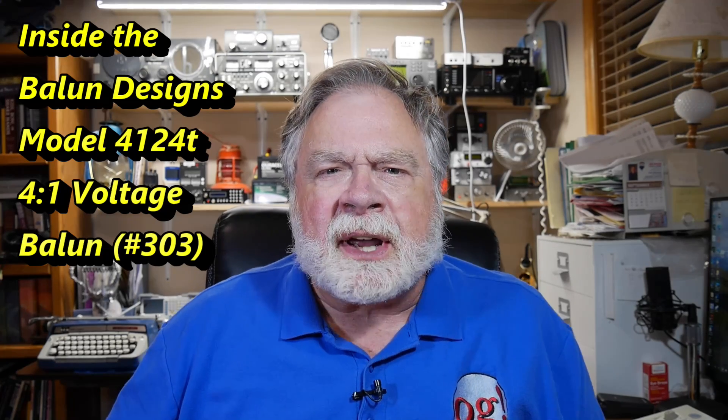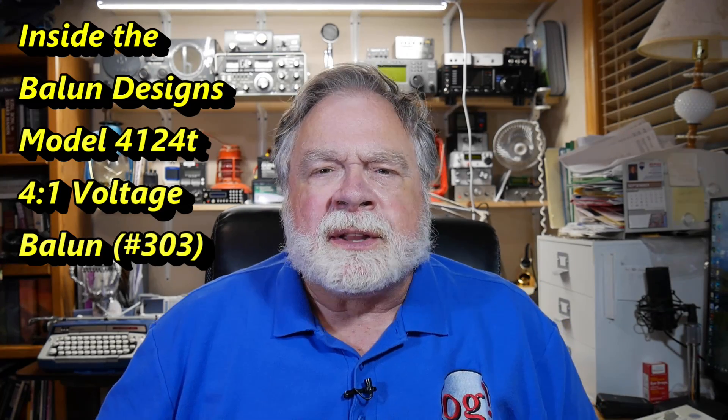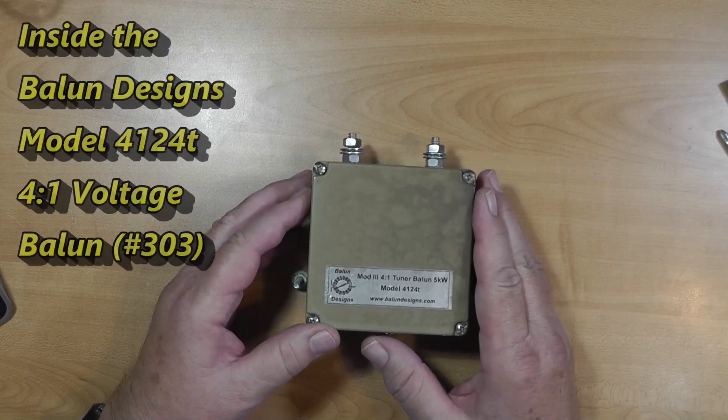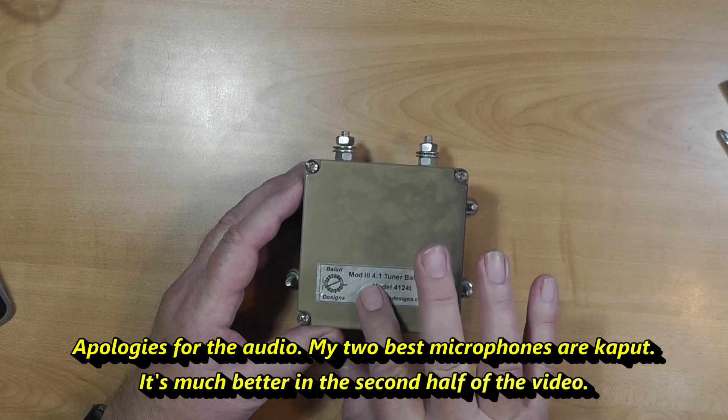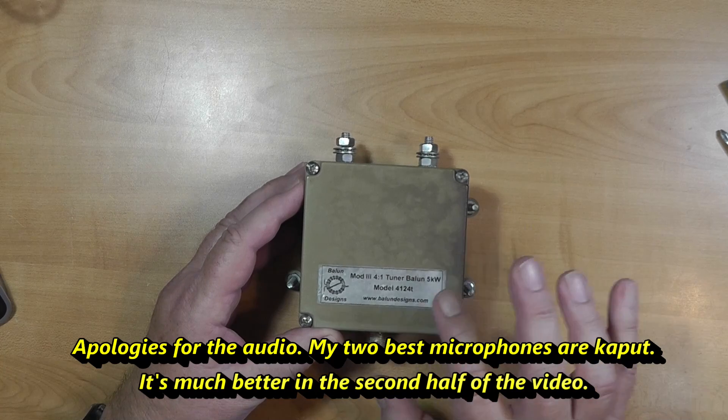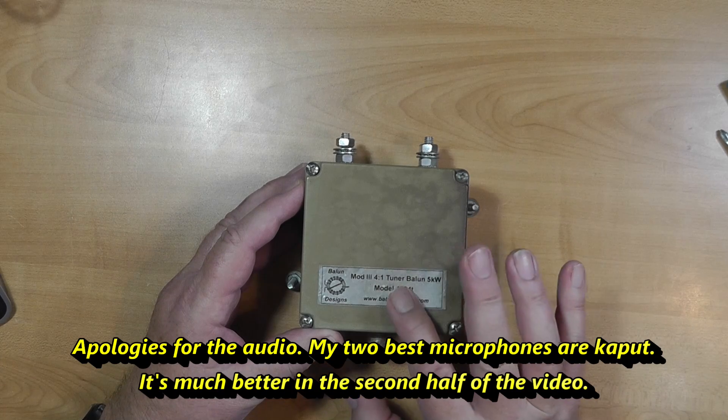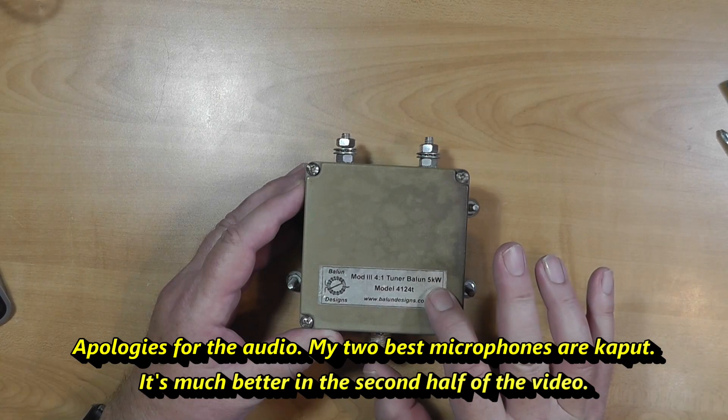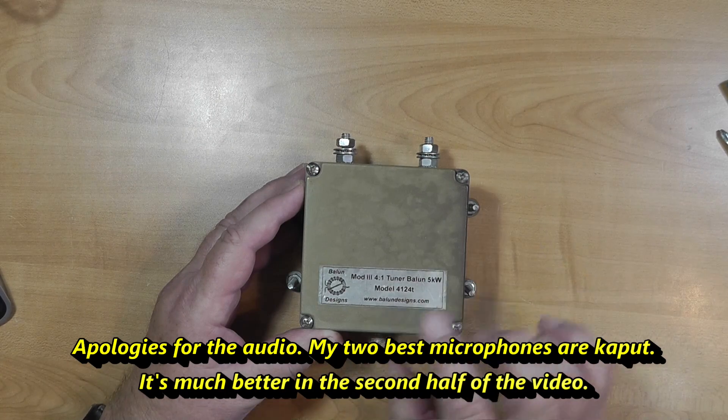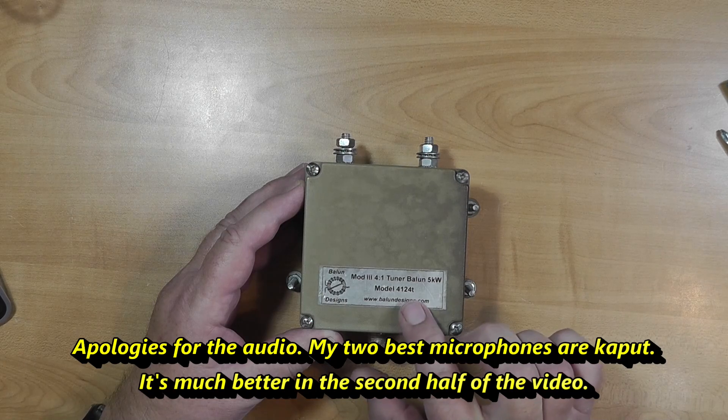Today we're going to look inside a balun, a real one. This is a balun that I've had for quite a while. This is from Balun Designs. At the time that they made it, it was called their Model 3. It's a different model number now. It's a four-to-one, what they call Tuner Balun, and it can handle up to five kilowatts. That's quite a bit. It's their Model 4124T.